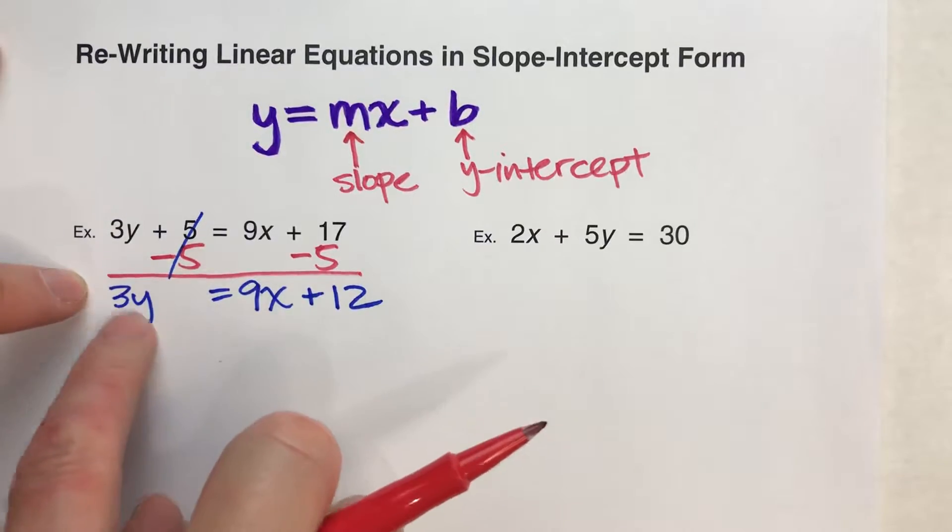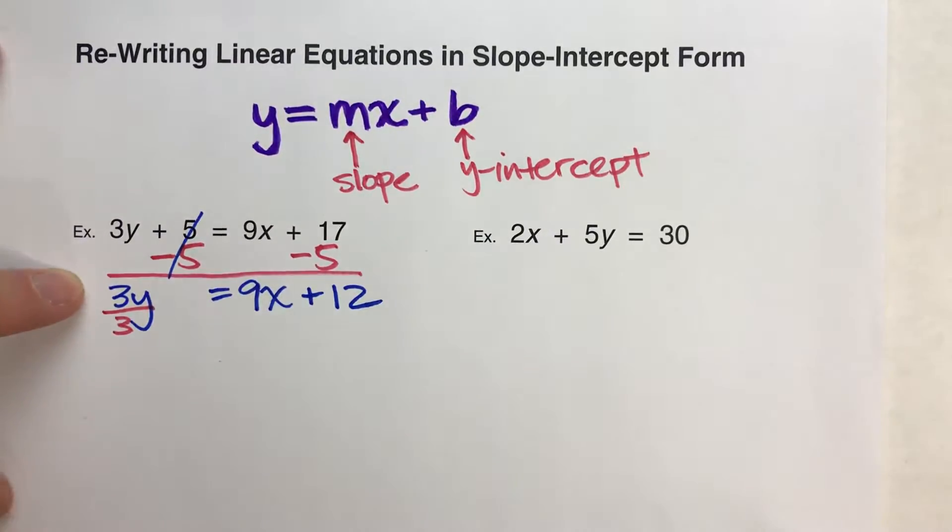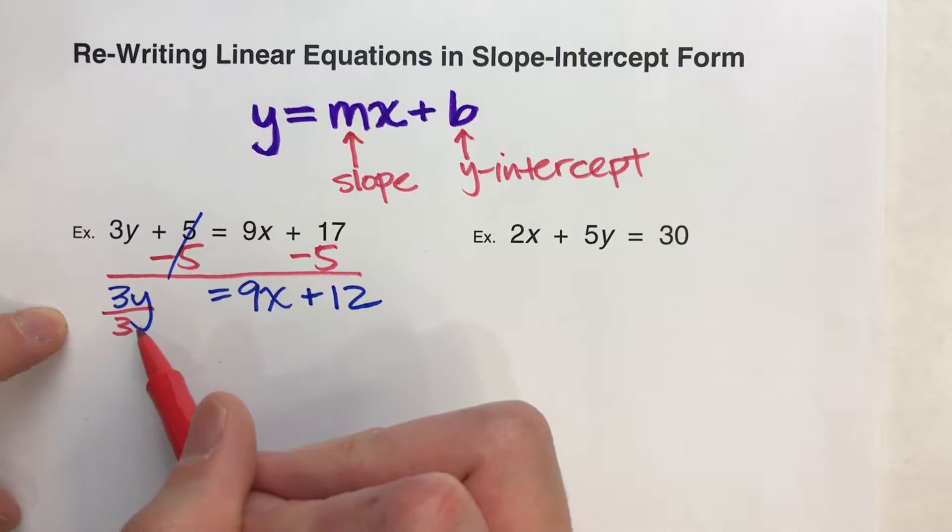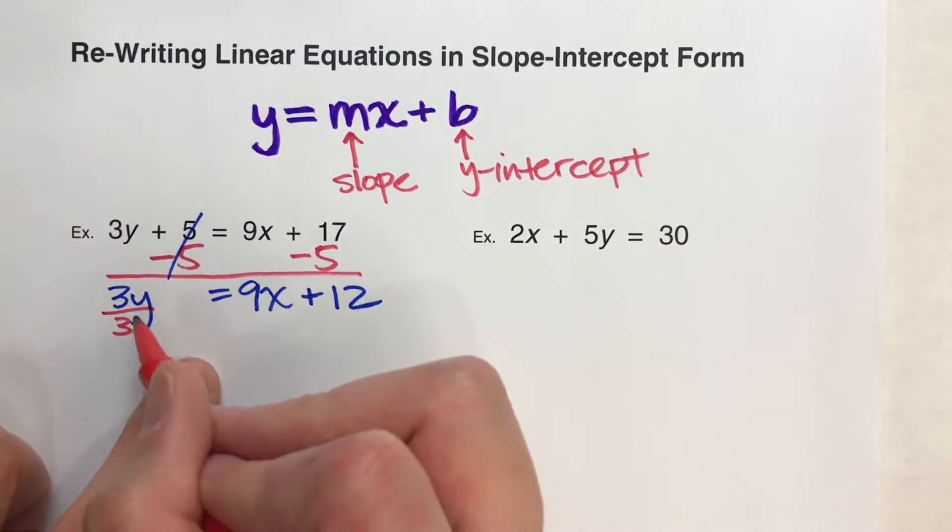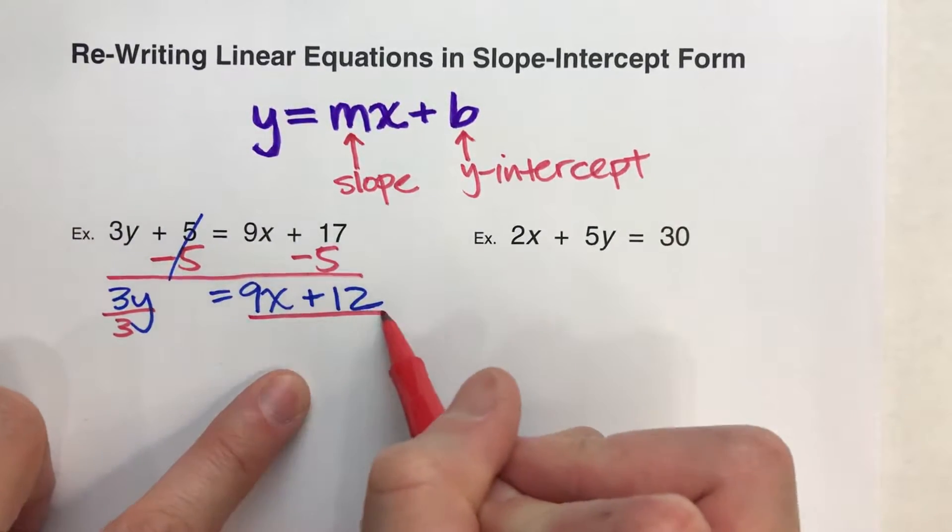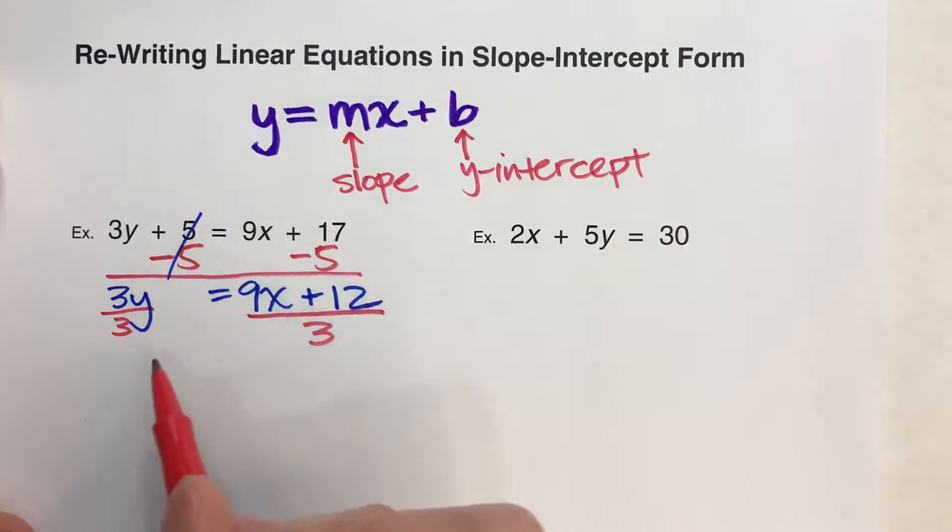Since we've got 3 times y, we're going to divide by 3. But what we do to one side, we have to do to the other. We have to divide by 3 on the entire other side.